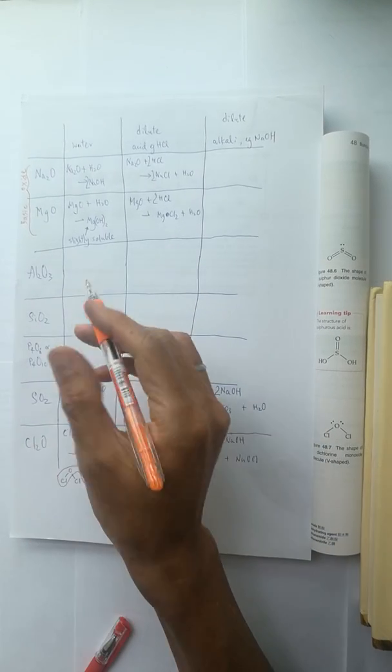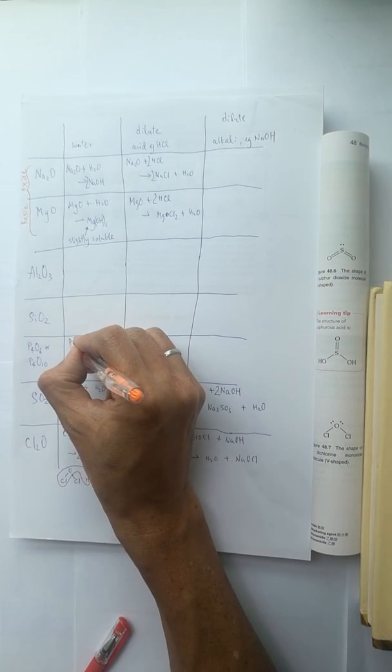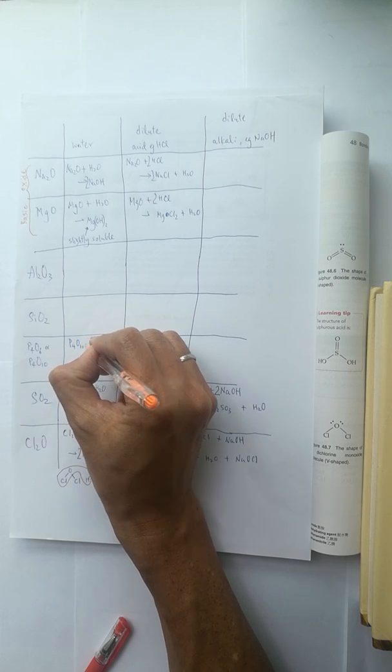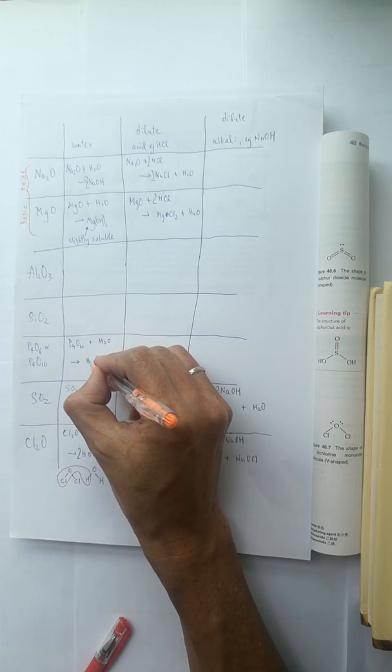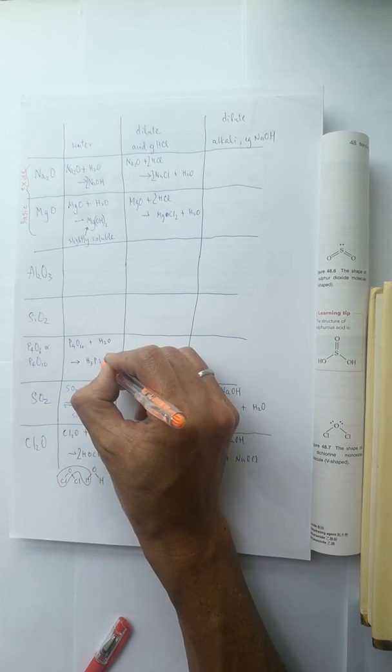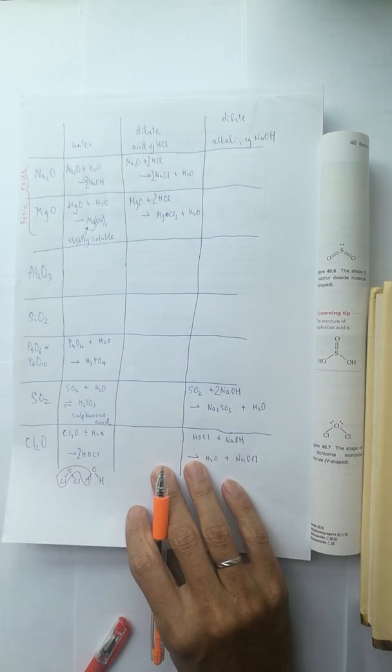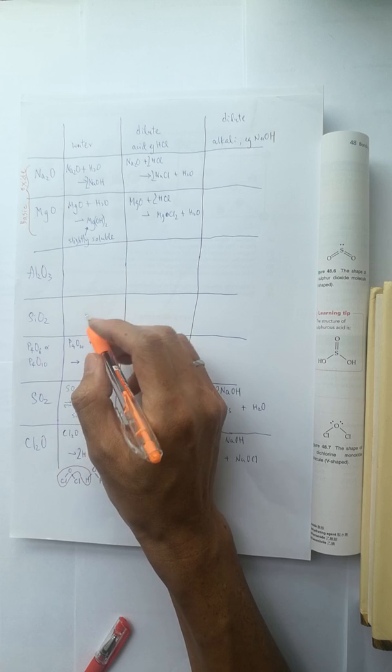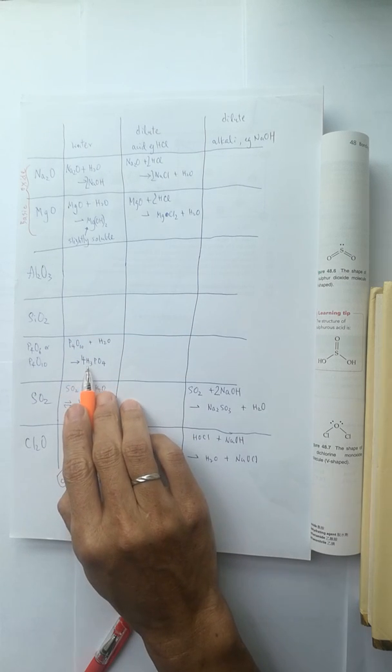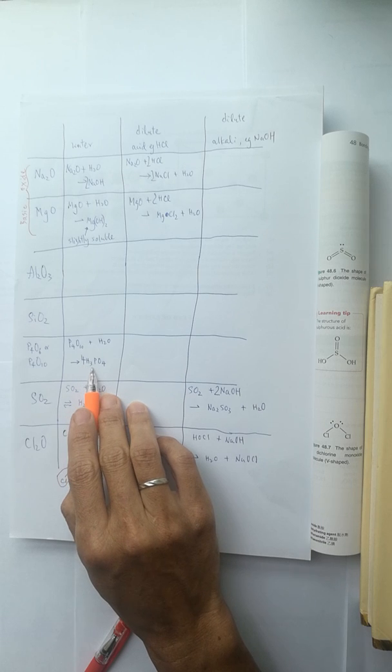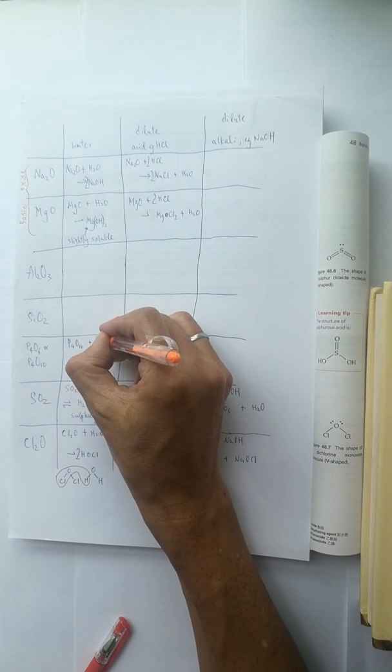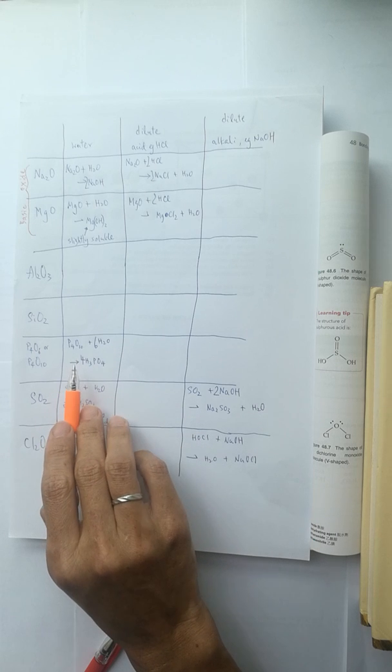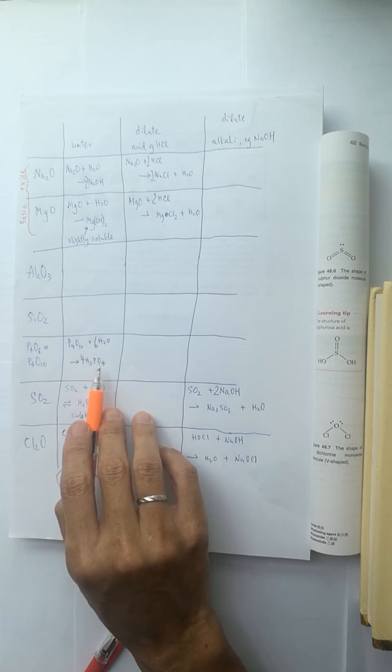Now look back at the equation. The P4O10 and water react vigorously to form H3PO4. So we have four phosphoric acid and there are 12 hydrogen, 6 from the water, and oxygen is totally 16.